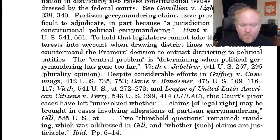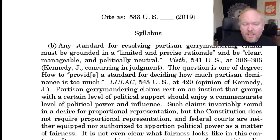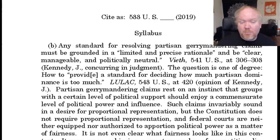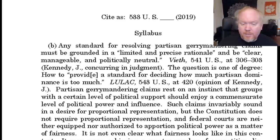Two threshold questions remain: standing, addressed in Gill, and whether such claims are justiciable. Any standard for resolving partisan gerrymandering claims must be grounded in a limited and precise rationale and be clear, manageable, and politically neutral. The question is one of degree — how to provide a standard for deciding how much partisan dominance is too much. Partisan gerrymandering claims rest on an instinct that groups with a certain level of political support should enjoy a commensurate level of political power. Such claims invariably sound in a desire for proportional representation, but the Constitution does not require it, and federal courts are neither equipped nor authorized to apportion political power as a matter of fairness.